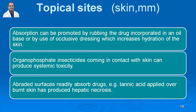Abraded or broken surfaces readily absorb certain drugs. For example, tannic acid applied over burnt skin has produced hepatic necrosis. This is sometimes practiced in village conditions where tannic acid or turmeric is applied over burnt skin, leading to absorption into circulation and hepatic necrosis.